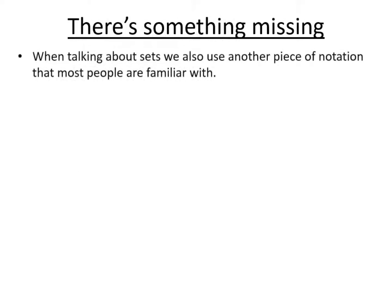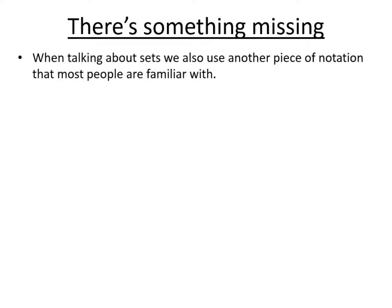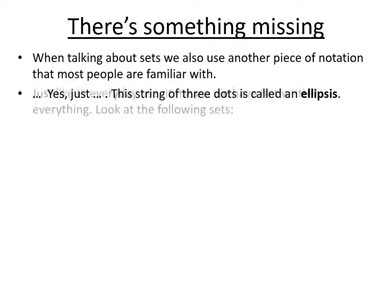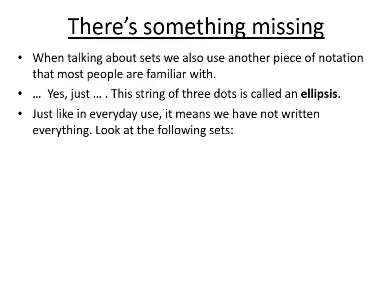When there's something missing, in everyday use we have a special symbol that we use and it can be used in sets too. Yes, just a string of three dots, it's called an ellipsis, that's its special name. Don't confuse it with the plural of ellipse, the squished circle which is spelled E-S. So it means we've not written everything just like in everyday use.